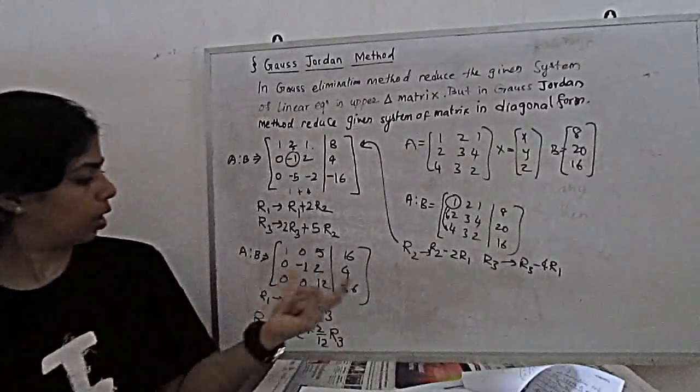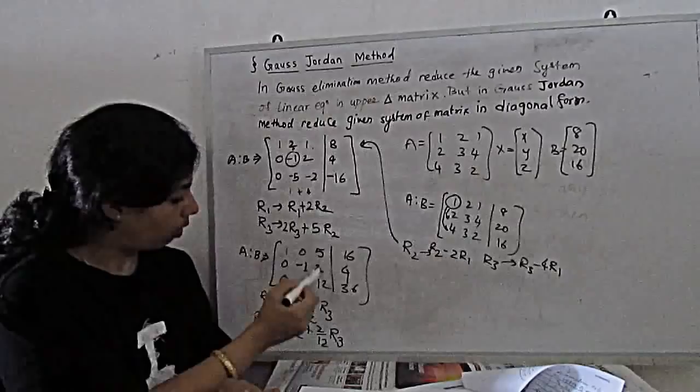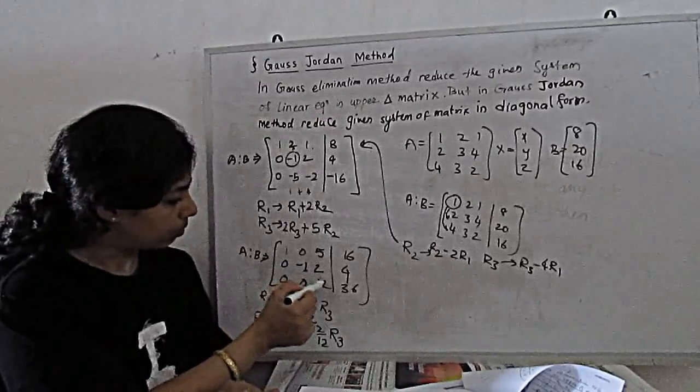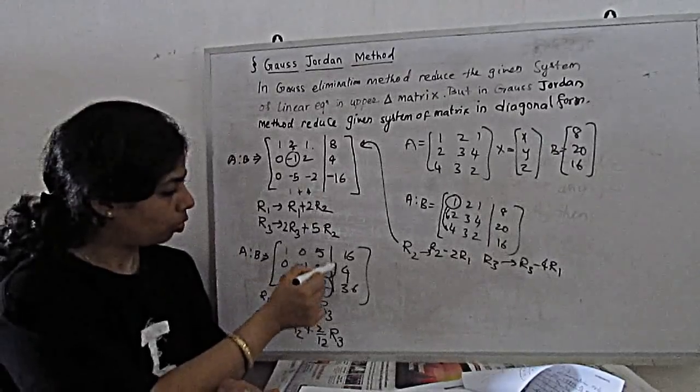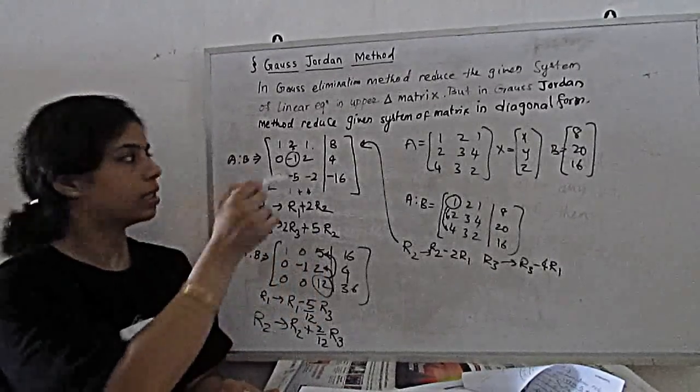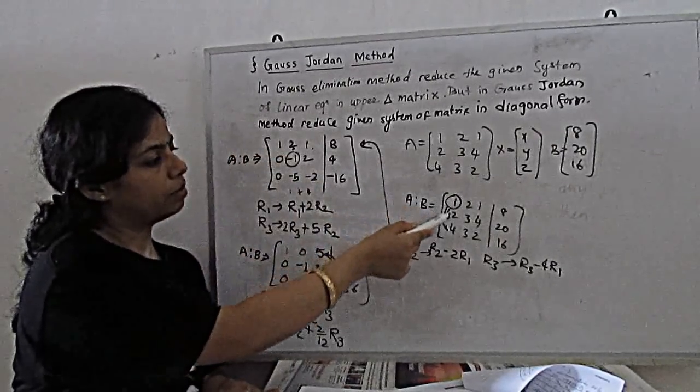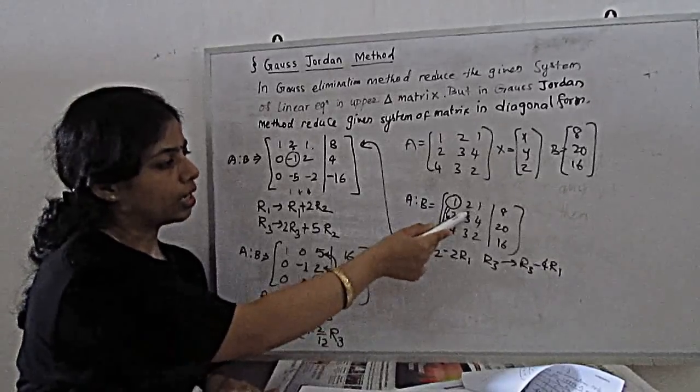So here is the operation. Now, with the help of this element, we have to make this become 0 and this become 0. First step, with the help of this element, become this 0 and this 0. Second step,